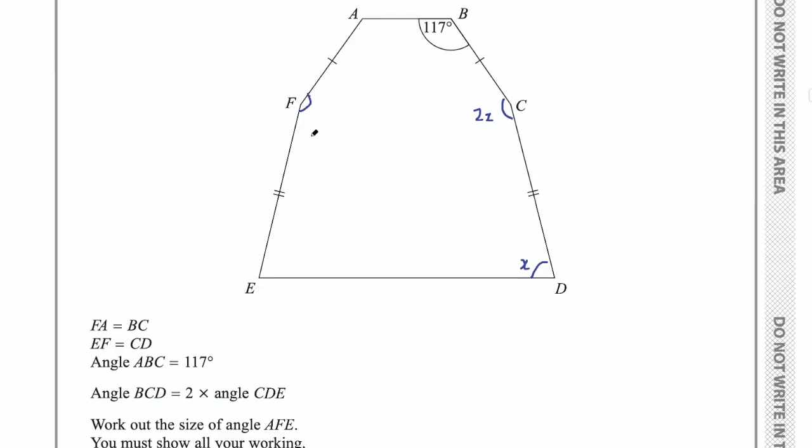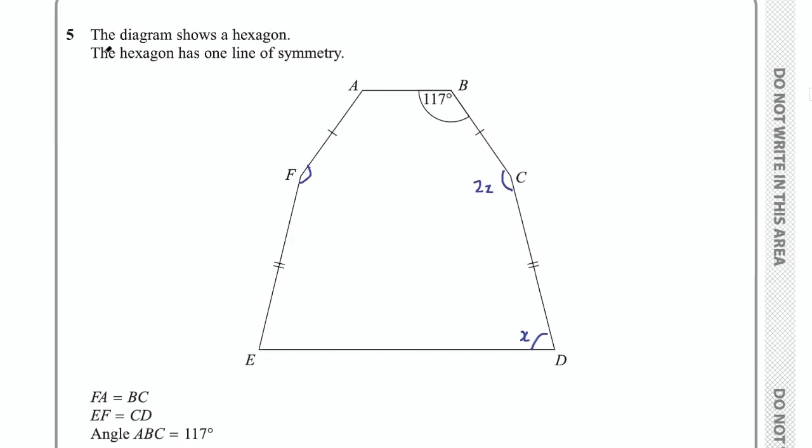This is an interesting problem because it says the hexagon has one line of symmetry, so you have to think where would that line of symmetry be and why is that important. Pause the video now if you'd like to have a go at solving this problem yourself.